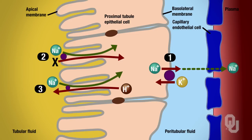Number four is paracellular transport of your chloride ions. Chloride ions move along an electrical gradient because they are attracted to the more positive environment in the plasma due to sodium reabsorption. That takes care of all the membrane transport on the apical membrane.